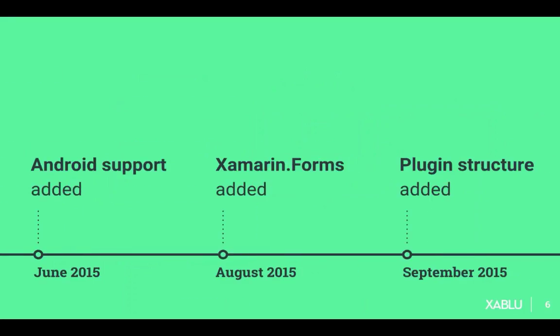Looking at the timeline of MvvmCross, after the main framework was created from 2012 to 2014, we started adding support for different frameworks within the Xamarin infrastructure. The first thing we did was add support for Android support libraries — most people here know them. You can think of, for example, the AppCompat support library, and other libraries like V4, V7, and later V13 and V17.